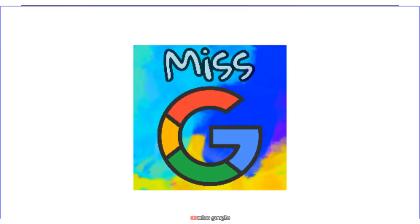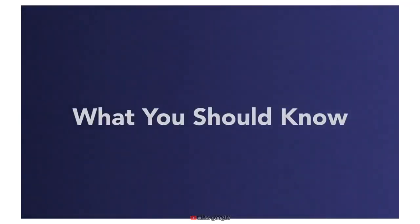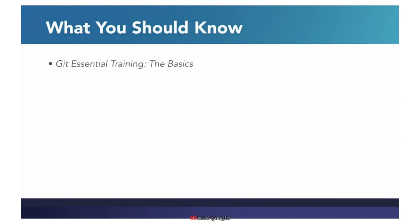Let's get started learning about branches, merges, and remotes. Before you dive in, you should already have the fundamentals of working with Git. If you don't, there's another course in the library that can help you. It's called Git Essential Training: The Basics. In that course, we talk about the basic architecture of Git.